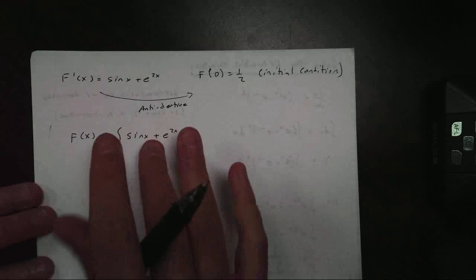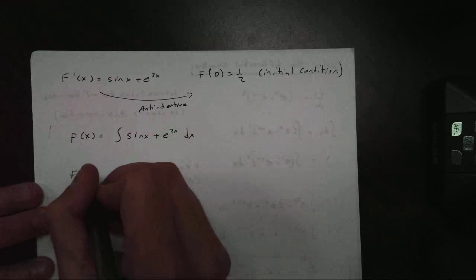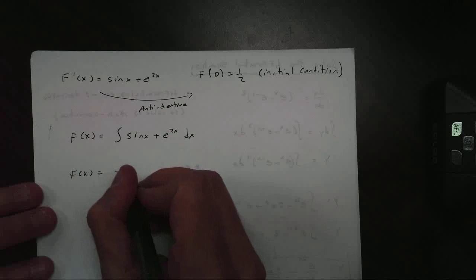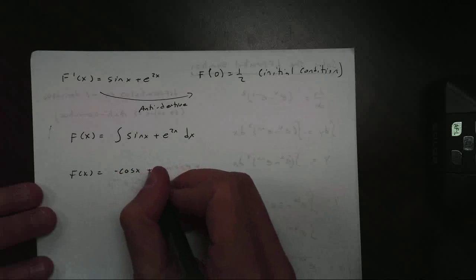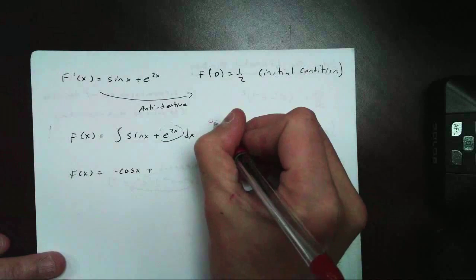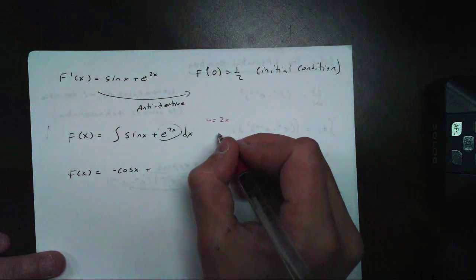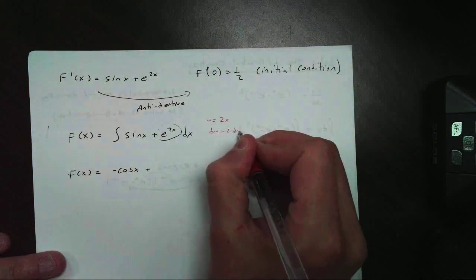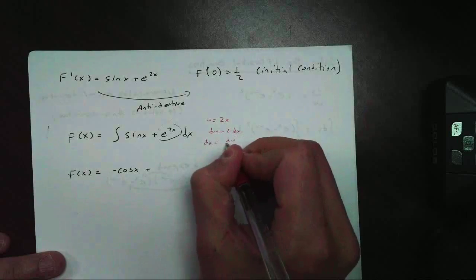We will mark that wrong, and so will the AP test. So now when I take the antiderivative, sine is easy. It's negative cosine of x, plus here's our e to the x. There's our u substitution. u is 2x, du is 2 dx, so dx equals du over 2.